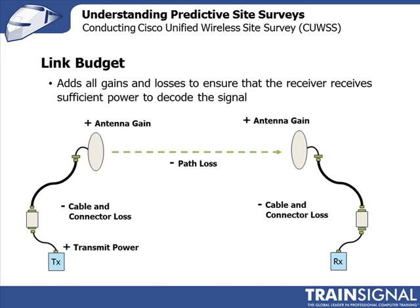So now my signal arrives at the receiver, and the question is: do I have enough signal strength to recover the 1s and 0s? This is where receiver sensitivity comes in. Each device — the access point, a laptop, an IP phone — they all have different receiver sensitivities. The issue is: did I receive enough signal strength on that device to be able to recover the 1s and 0s?